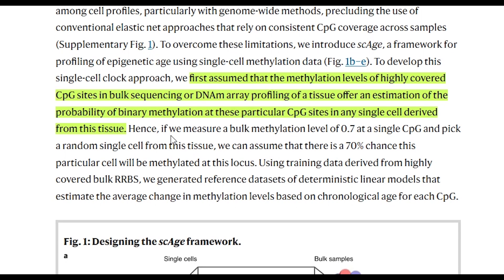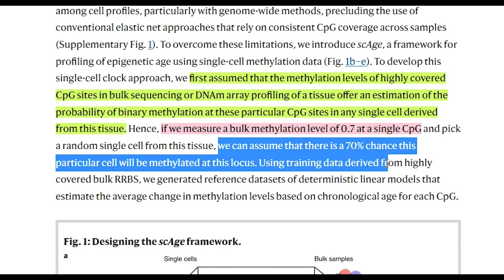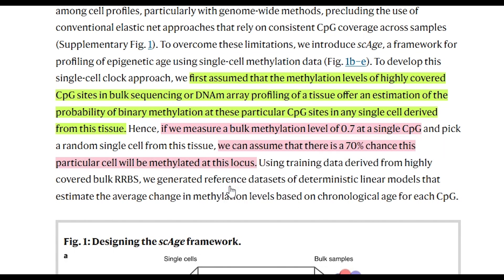So to phrase that in a way that I can understand, if in the bulk analysis we see a CpG site that has high methylation then I would estimate that there would be a high probability that a single cell would have a methyl at that site too. And so effectively you can derive a probability for each CpG site based on bulk data and that would be your reference points.